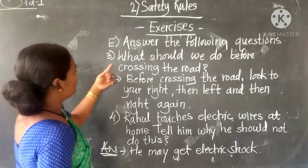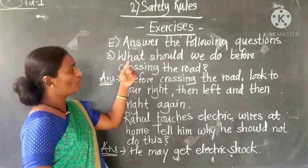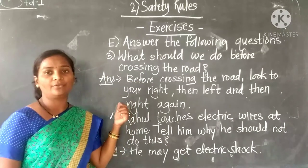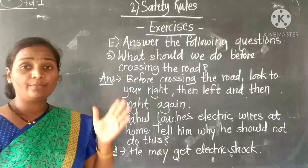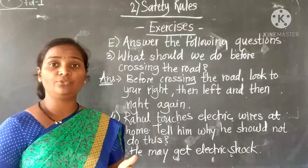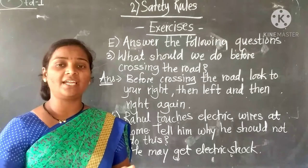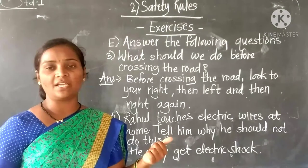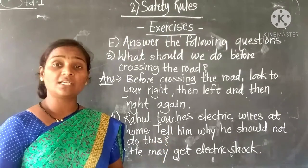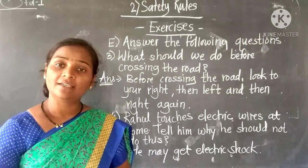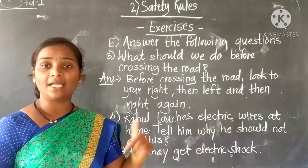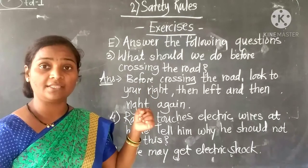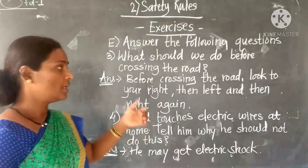Question three: what should we do before crossing the road? Before crossing the road, first look to the right side, then look to the left side, and once again look to the right side. These are the steps you must follow before crossing the road.